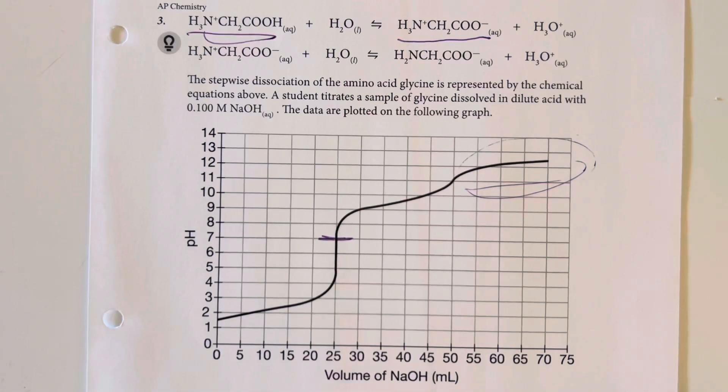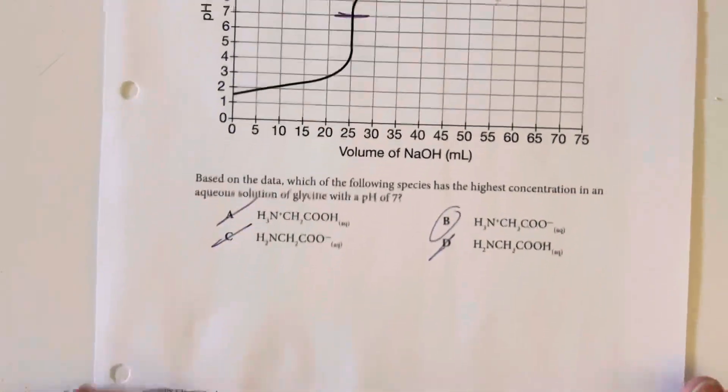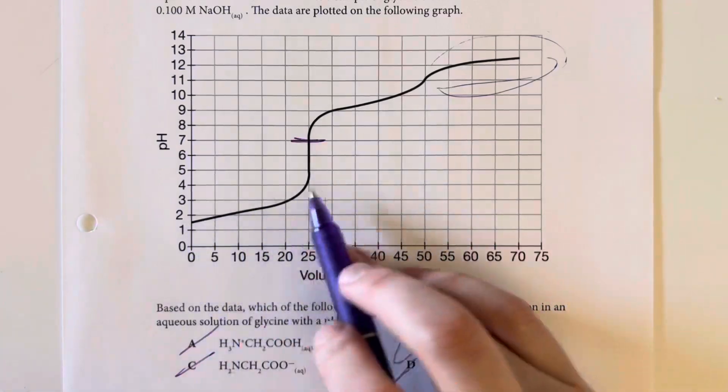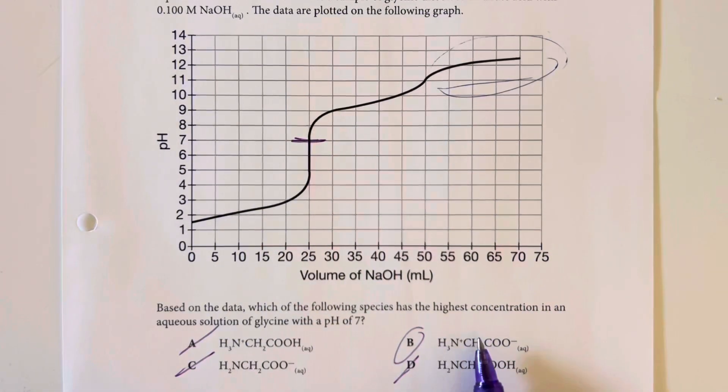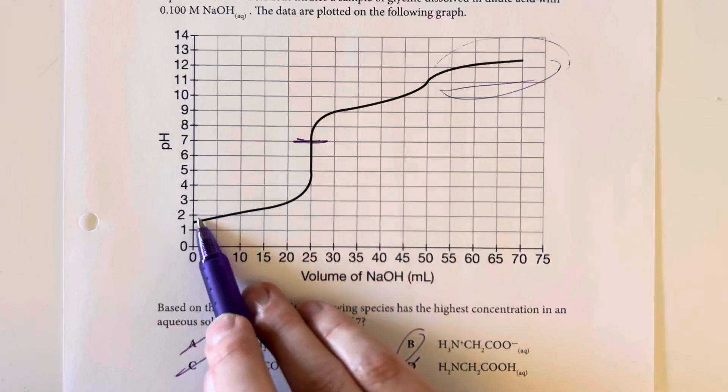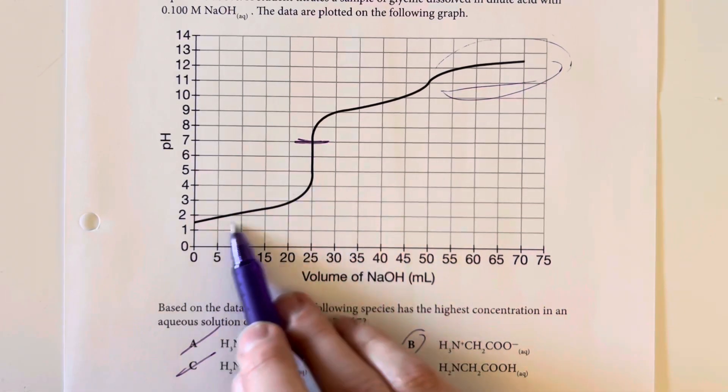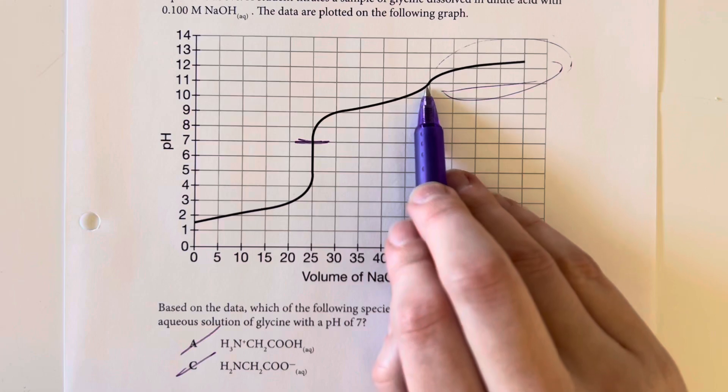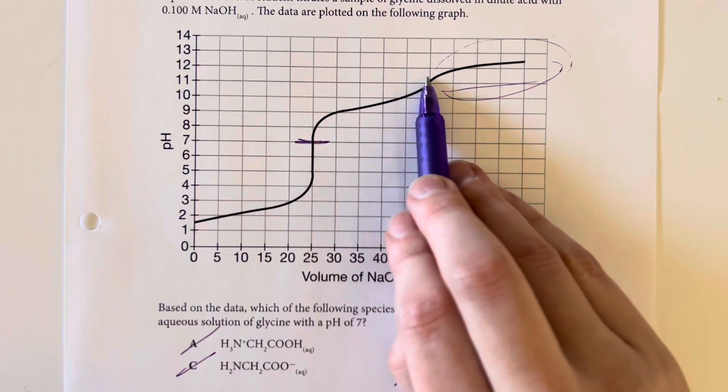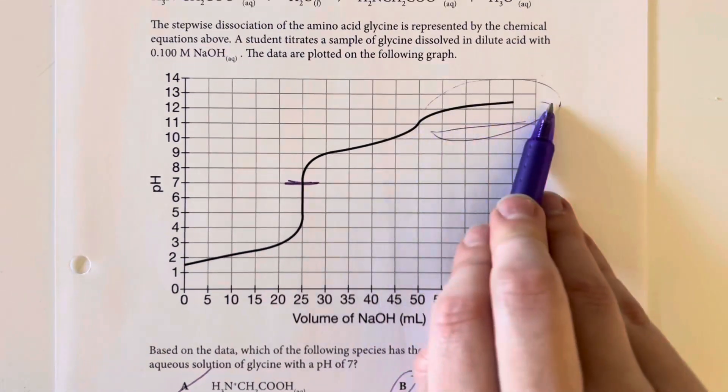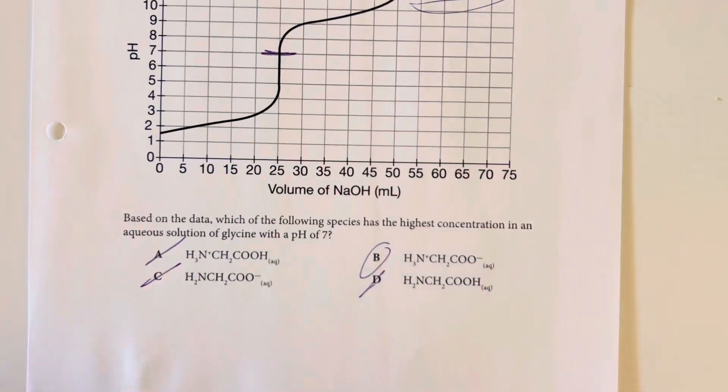So between these two, this one's not even an option here. So really, we are just left with answer choice B. Again, we are producing more of that first deprotonated glycine molecule as we add the sodium hydroxide, continuing to make more of that first deprotonated glycine until we reach here, where we have that second deprotonation. So the first deprotonated glycine molecule is going to be what we have the majority of at that pivot point in our graph.